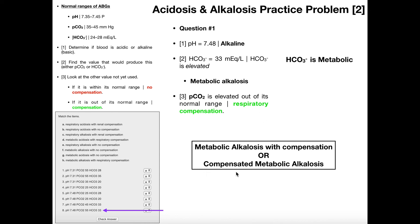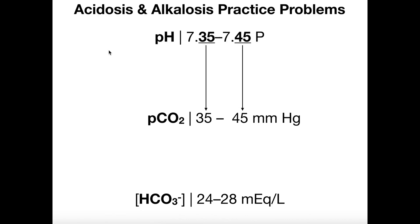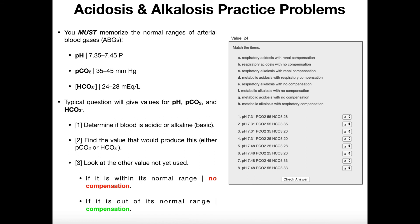We can also say compensated metabolic alkalosis. This three-step process is the same for every single type of problem. Remember, you do have to have these values memorized in order to work the problems on a quiz or an exam. Hopefully this video made sense and you learned how to work acid-base problems in anatomy. Please make sure to like this video and subscribe to my channel for future videos and notifications. Thank you very much.